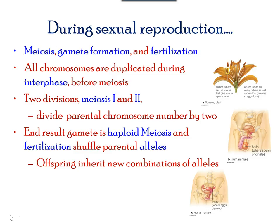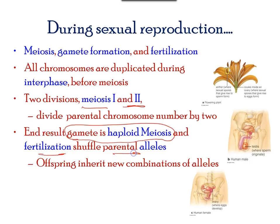Meiosis is composed of two cell divisions, referred to as meiosis I and meiosis II. The somatic cell is referred to as diploid. Gametes formed are haploid. After fertilization, the haploid gametes result in a diploid zygote. Meiosis takes place in sex organs: ovaries for females and testes for males.